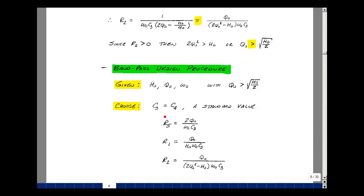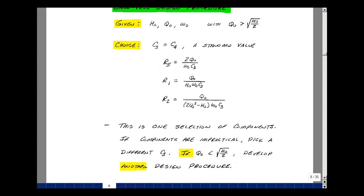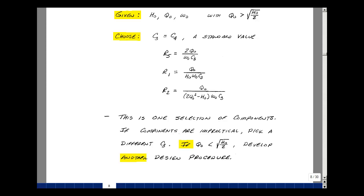So given the three filter design parameters, we can come up with a design procedure, but we have to just check that Q-naught is greater than the square root of H-naught over 2, but if it is, we have to go back and do a different design procedure. However, we wouldn't pick C3 to equal C4, and there's an infinite number of procedures. We'll pick a standard value that's in our parts box, and then our values of R5, R1, and R2 are a consequence of our equations, and our values of H-naught, Q-naught, and omega-naught, and our initial pick of C3. And just reiterating what we had above here is that if you do get an impractical result, just pick a different C3.